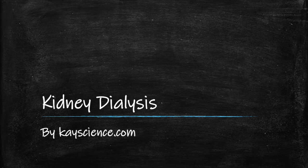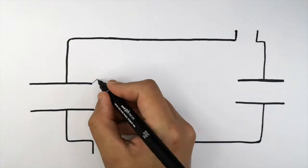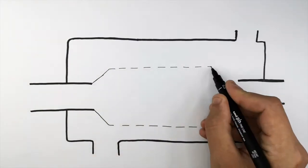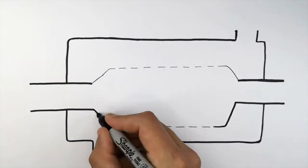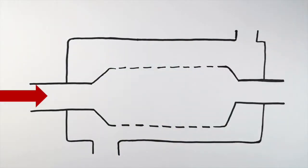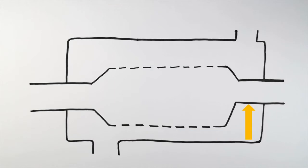This is a kidney dialysis machine. What I'm drawing here is the partially permeable membrane. This partially permeable membrane separates the blood from the patient and the dialysis fluid that flows through the dialysis machine.